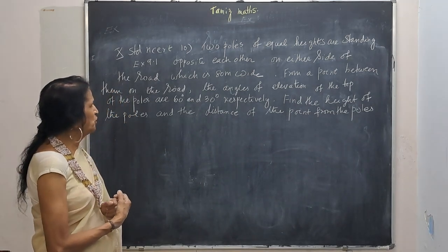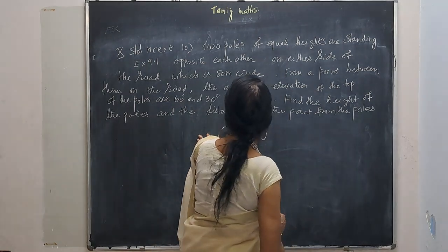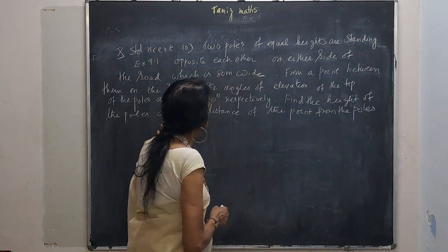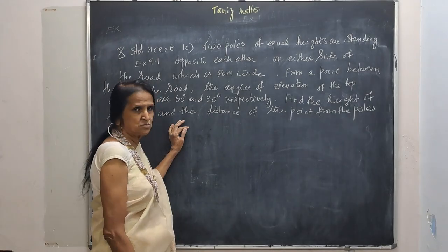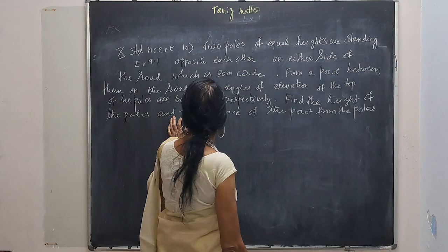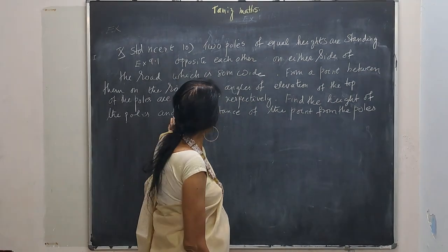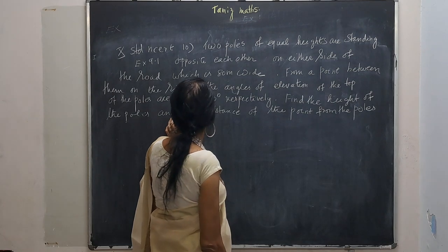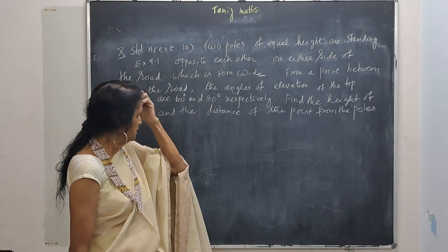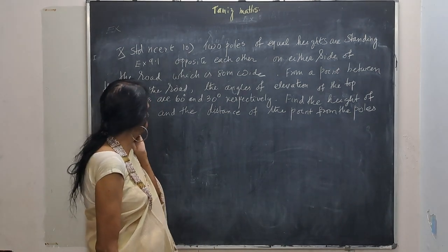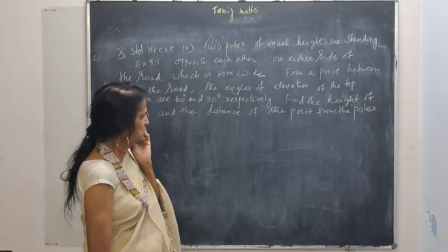Two poles of equal height are standing opposite to each other on either side of the road which is 80 meters wide, from a point between them on the road. So the angle of elevation of the top of the poles are 60 degrees and 30 degrees respectively. Find the height of the pole and the distance of the point from the poles.